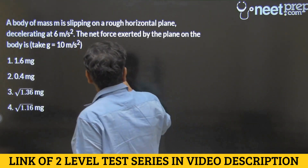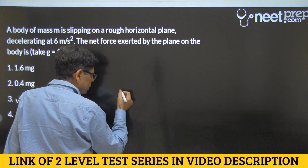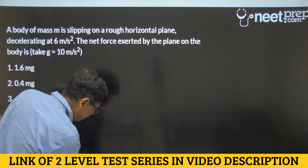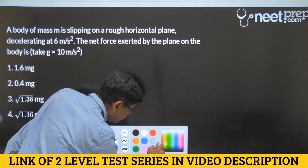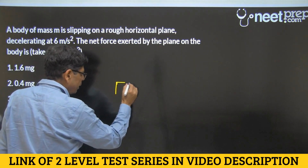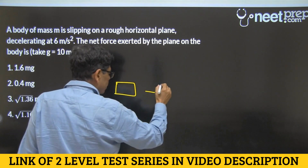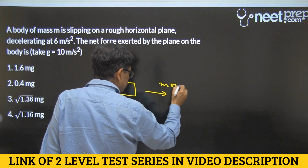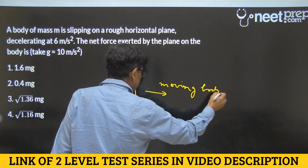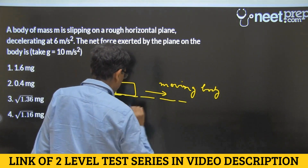A body of mass M is slipping on a rough horizontal plane. Here is our body and it's moving this way — this is our moving body. This is the surface, or supporting floor, on which it is moving.